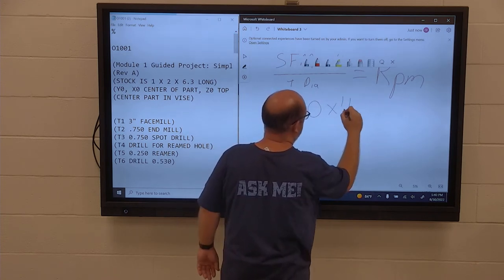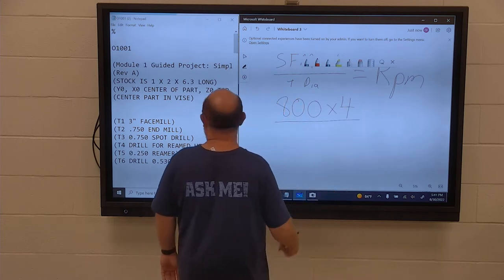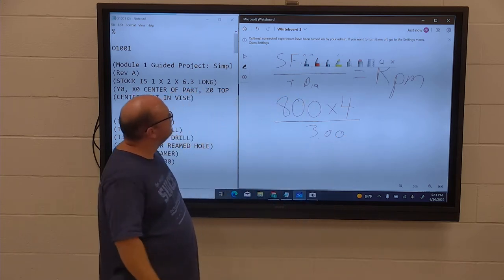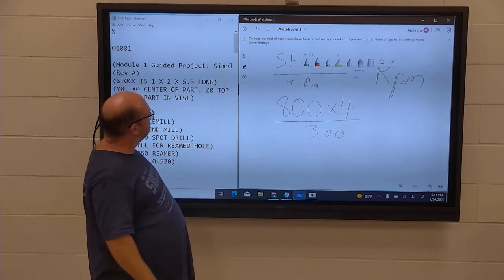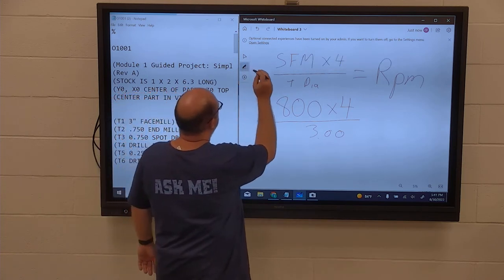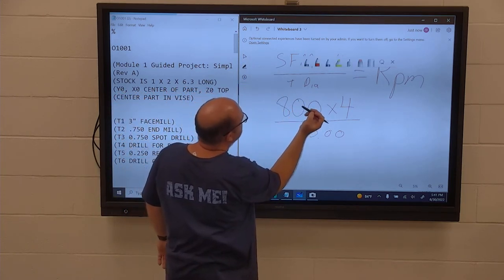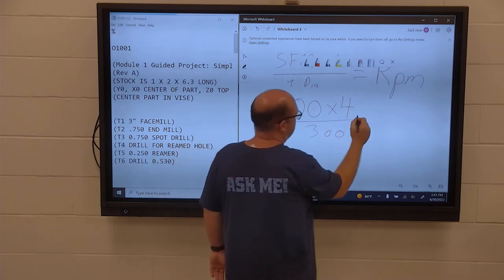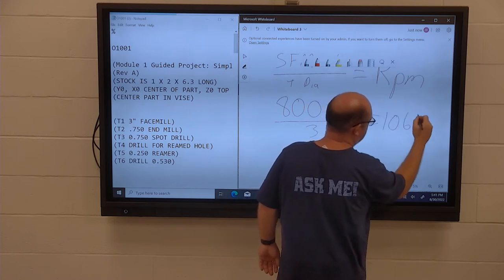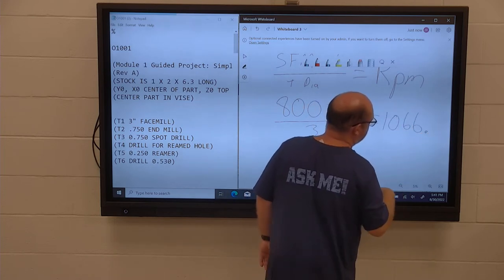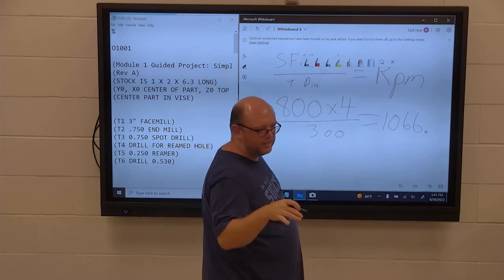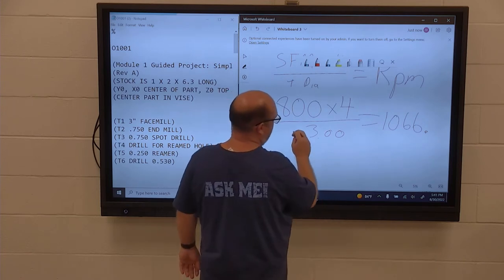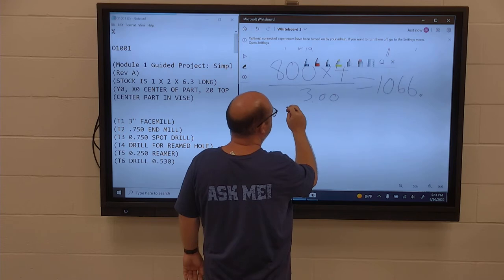So you got 800 times 4 all divided by diameter and it's 3 inches. So what do you guys get? 1,066. 1,066 and repeating. I'll put a decimal on everything just so I don't forget.